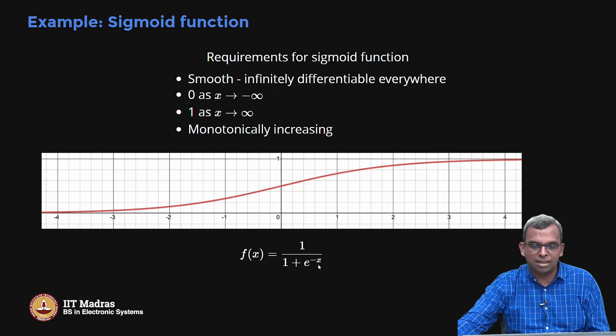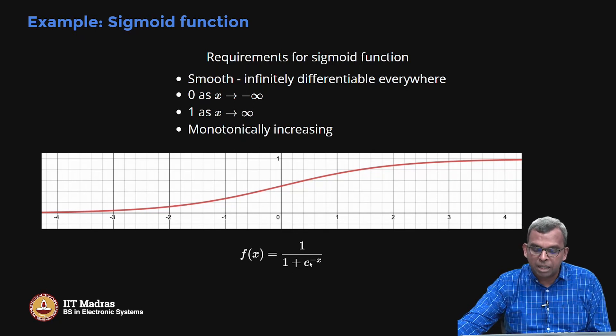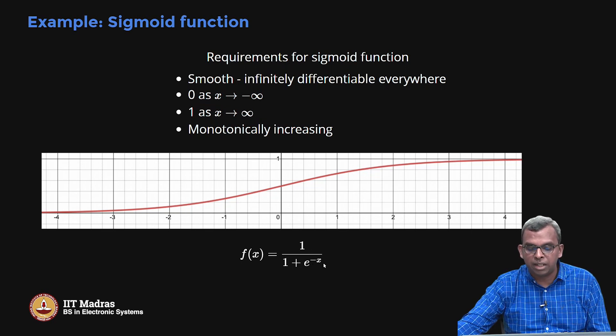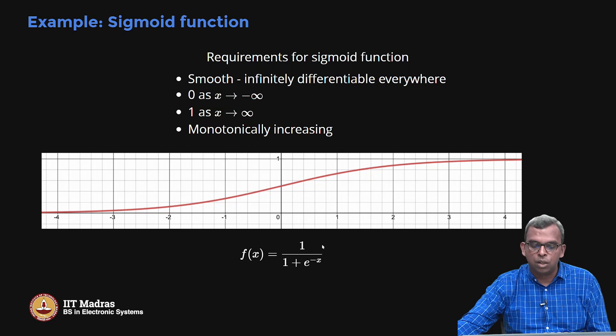So it is very, very smooth and nice and differentiable. And what about when x becomes very, very large? When x becomes very large, I have put this 1 by 1 plus and this goes to 0, but this goes to 1. And it is monotonically increasing. Why? Because e power minus x from minus infinity to plus infinity is monotonically decreasing. So this 1 by 1 plus will be monotonically increasing.